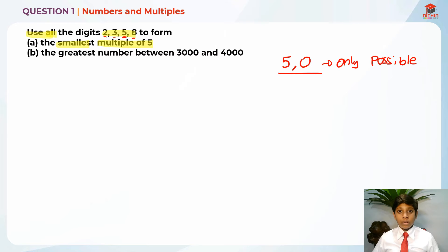So we are going to use 2, 3 and 8 to form the smallest possible. So that's 2, 3 and 8. So in order to form the smallest possible, we need to arrange them in ascending order small to big.